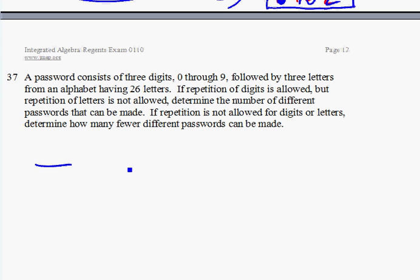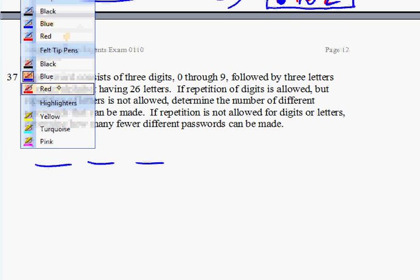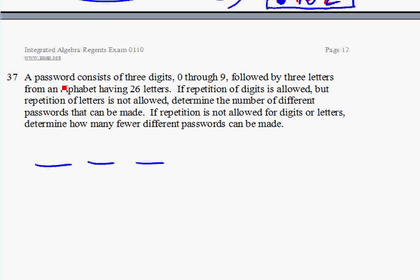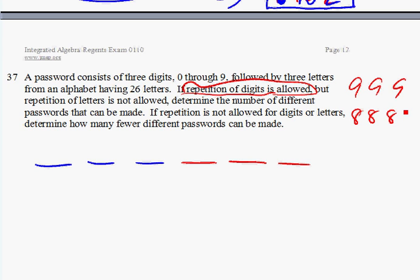We're creating a password. The password has three digits in the beginning, so one, two, three, followed by another three letters, one, two, three. Now if repetition of digits is allowed, that means that once we put the number there, it's from zero to nine, I can have repeating numbers such as nine, nine, nine, or eight, eight, eight. I can repeat the same digits, that's fine.